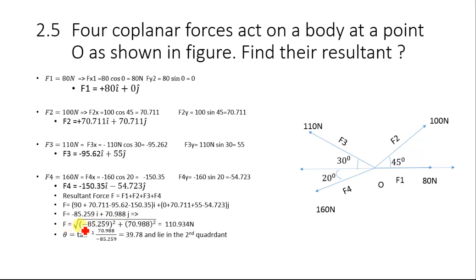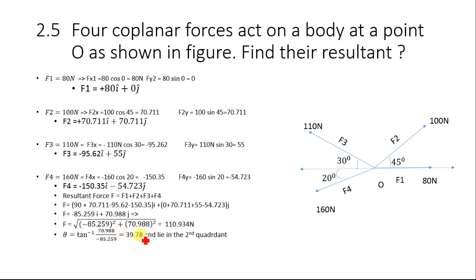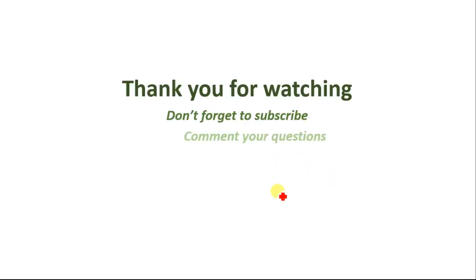The magnitude of the resultant is the square root of 75.259 squared plus 70.988 squared, which equals 110.934 newtons. The direction is theta equals tangent inverse of 70.988 divided by 75.259. The resultant lies in the second quadrant.